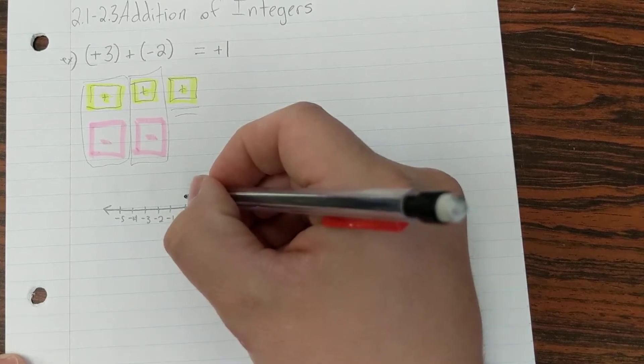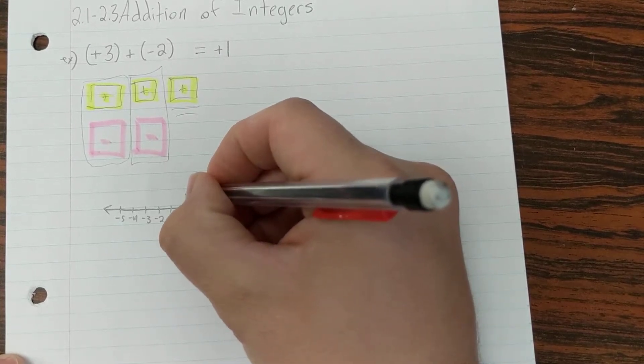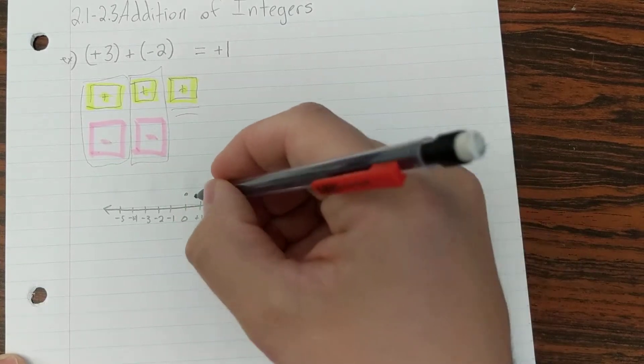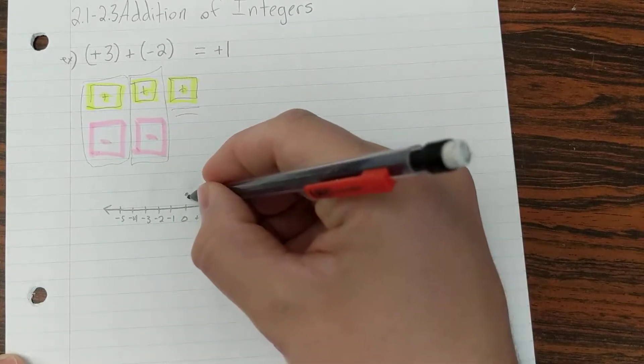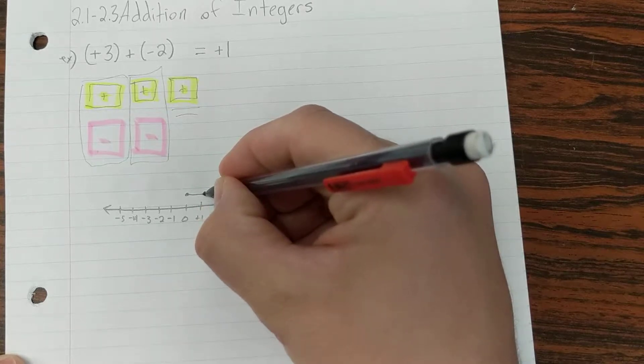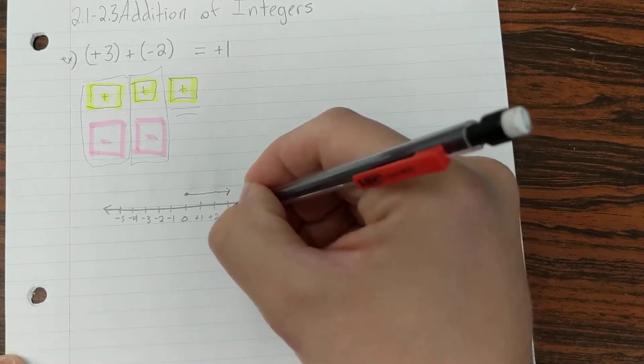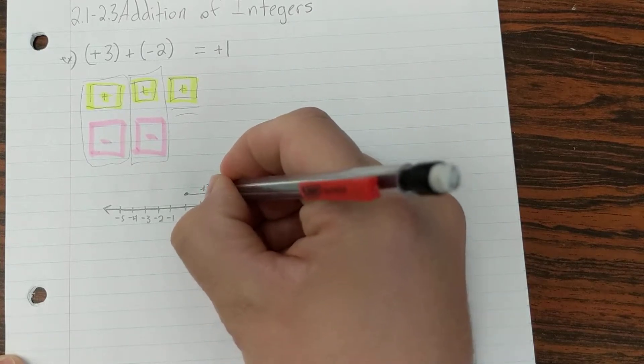So we've got our positive 3, and we're going to add a negative 2. So what we do first is we find 0, and positive is usually right on a number line. It's the convention we follow. So we're going to start at 0, just above 0, and we're going to go 1, 2, 3. And where do we end up? We end up at positive 3. So that's our positive 3.